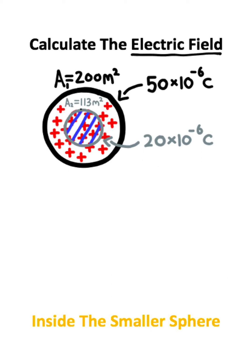We're trying to calculate the electric field inside the small imaginary sphere. The equation needed is: the product of electric field and area equals the charge enclosed divided by the permittivity of free space, which is a constant.